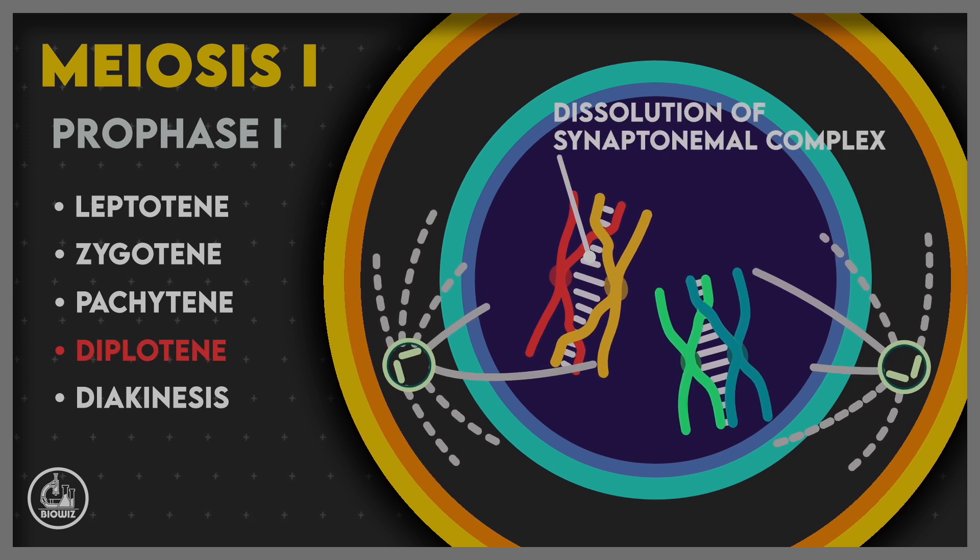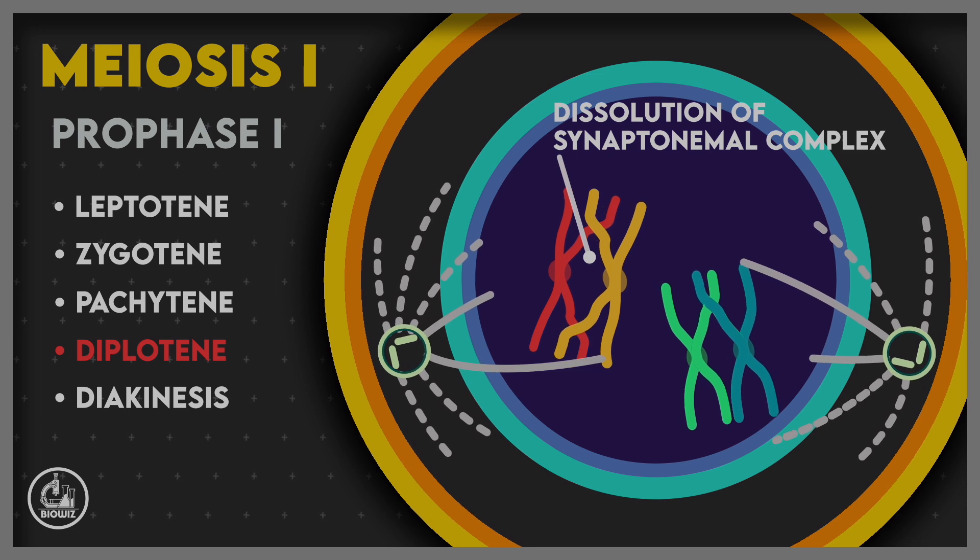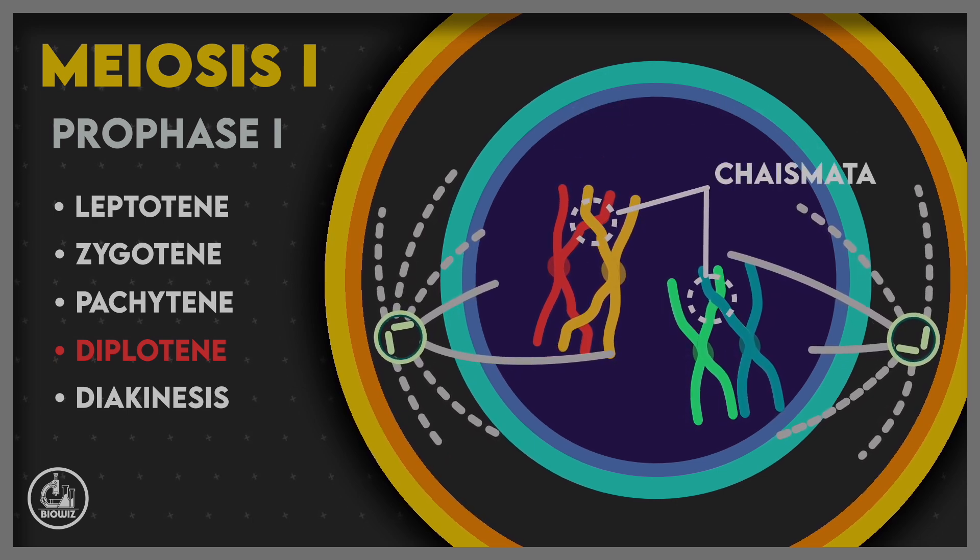In diplotene, the synaptonemal complex is dissolved. This results in appearance of X-shaped structures called chiasmata, which are the sites of crossing over.